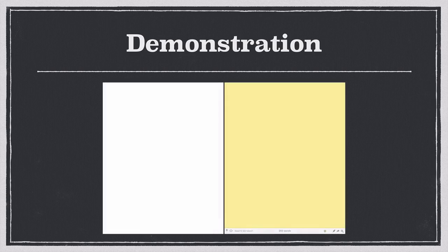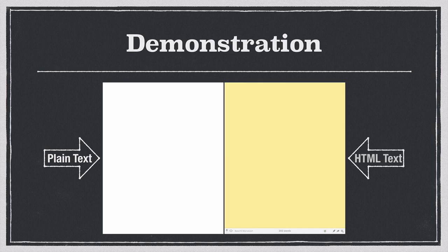Now let's move to the demonstration part of this video. On the next screen, the left side will have a white background — that's where I'll be writing in plain text. The right side is where the final formatted text will appear, representing how your text might look published on a website. I've made it yellow with contrasting colors to distinguish it from the plain text side. Because this is more of a demonstration than a how-to video, I'm going to move quickly through the features. My objective is to give you an idea of how Markdown works so you can explore it further on your own.